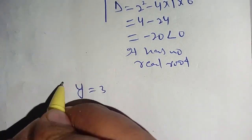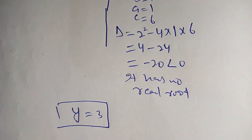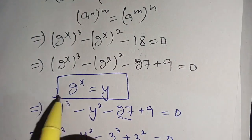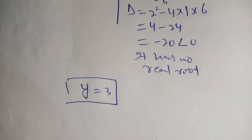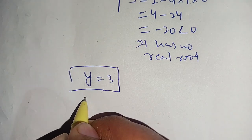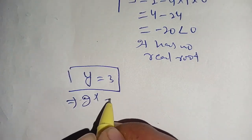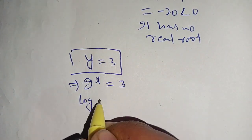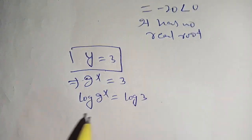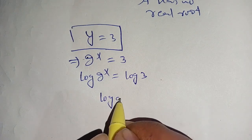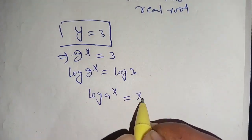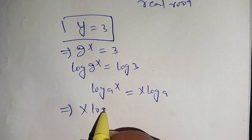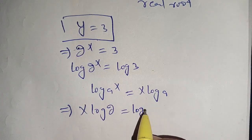Since y equals 3, and we substituted y equal to 2 to the power x, we get 2 to the power x is equal to 3. Taking log on both sides: log of 2 to the power x equals log of 3. Using the property that log of a to the power x equals x times log a, we get x times log 2 equals log 3.